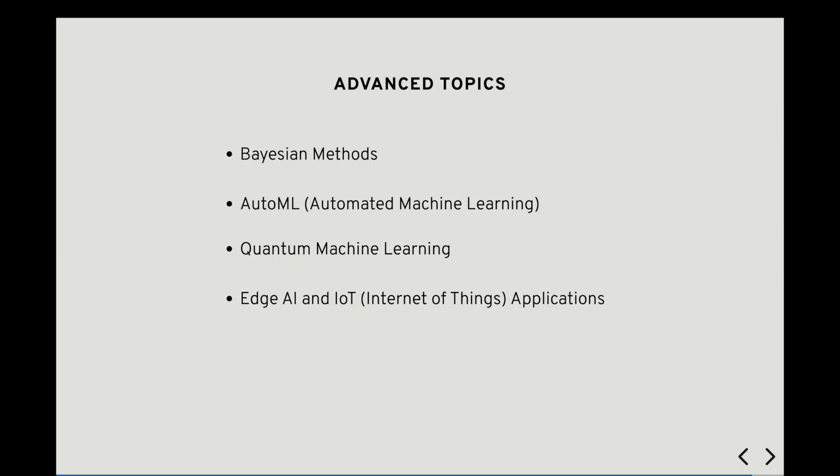Edge AI and IoT, or Internet of Things, applications. Edge AI refers to the deployment of AI models and algorithms on edge devices such as smartphones, IoT devices, and embedded systems, enabling real-time inference and decision making at the edge of the network.